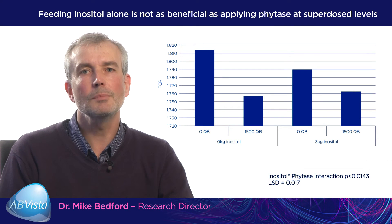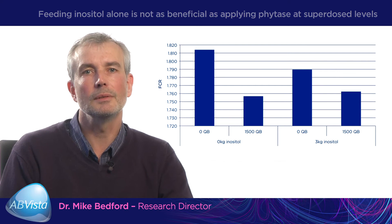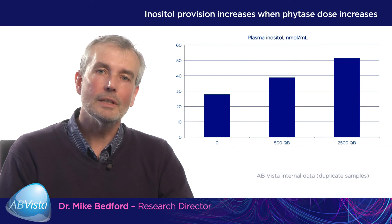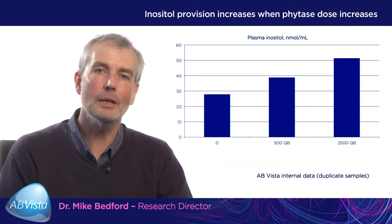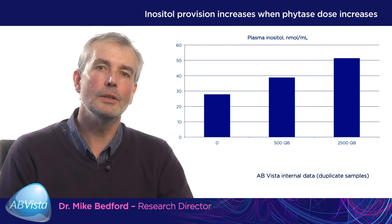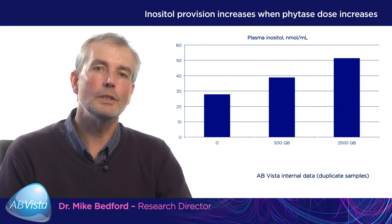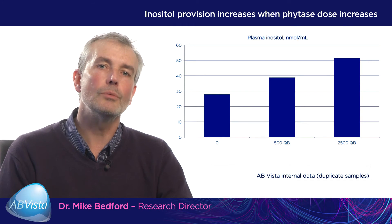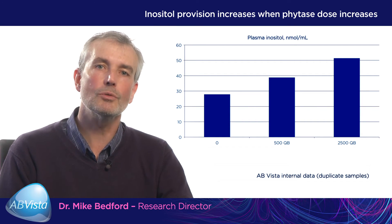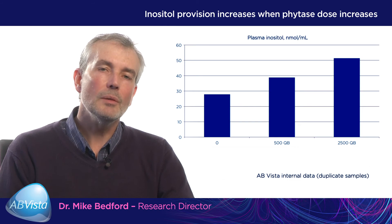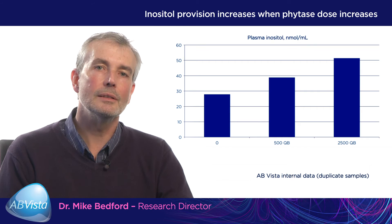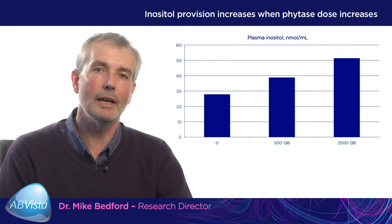We believe that inositol provision is probably worth about 30% of the total superdosing response. To confirm that inositol produced in the gut is actually absorbed and used by the animal, work with piglets shows that using 500 or 2500 units of phytase produces a significant, dose-dependent increase in inositol levels in the plasma. This clearly shows that when we superdose, inositol does enter the animal's bloodstream. What it actually does there we don't fully know — there are many roles that inositol plays — but nobody is quite sure which role is responsible for the growth response.